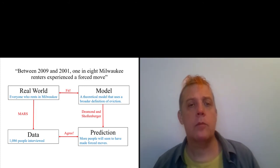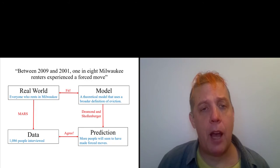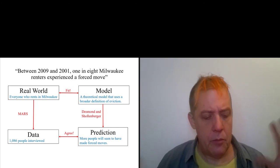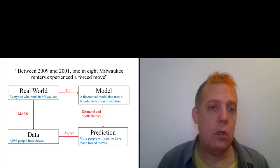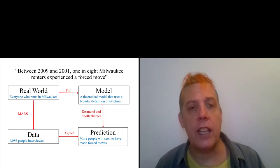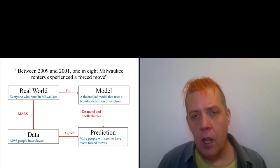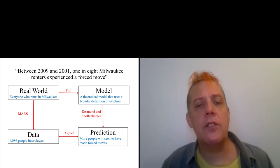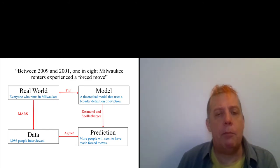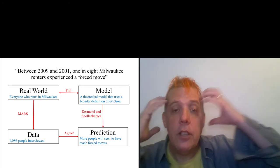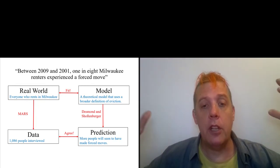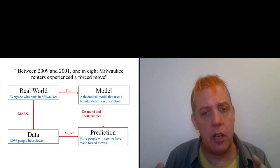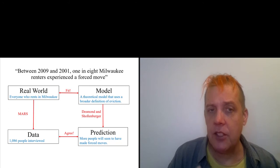If you want to look at the four-box diagram that Desmond and Schoenberger do, coming from Geary, you see that you've got a real world and a model of the real world. The real world is the city of Milwaukee and all the people who rent in it and all the landlords and all of that. Our model is our understanding of eviction.